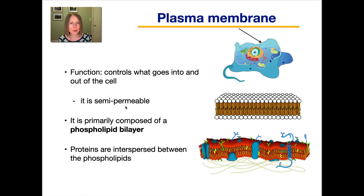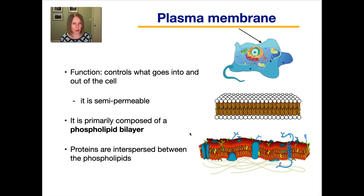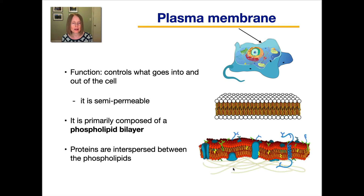The plasma membrane is considered to be semi-permeable. Permeable means that things can go in and out; semi means not everything, so some molecules can enter but others cannot. The structure of the plasma membrane is that it is primarily composed of a phospholipid bilayer — two layers of phospholipid molecules. In reality, it also contains proteins as well as some additional molecules interspersed between the phospholipids.